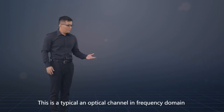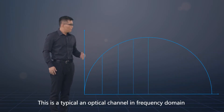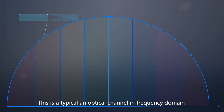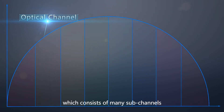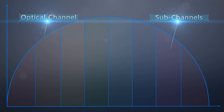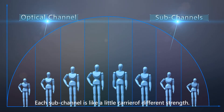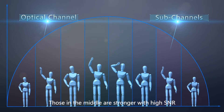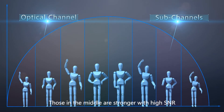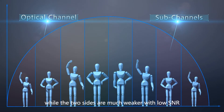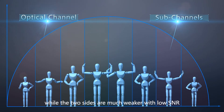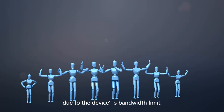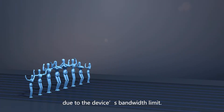This is a typical optical channel in the frequency domain, which consists of many sub-channels. Each sub-channel is like a little carrier of different strength. Those in the middle are stronger with high SNR, while the two sides are much weaker with low SNR due to the device's bandwidth limits.